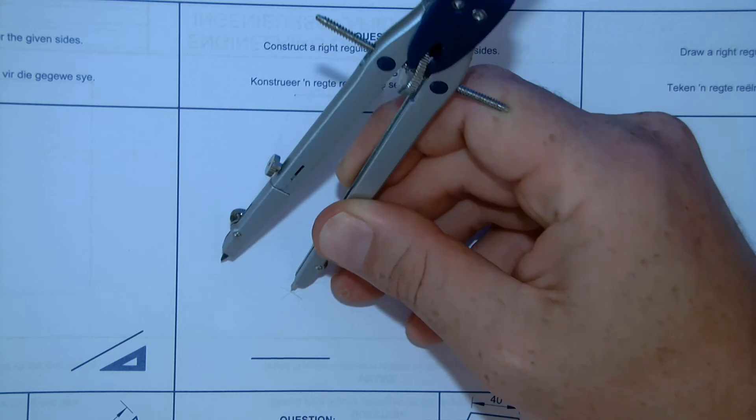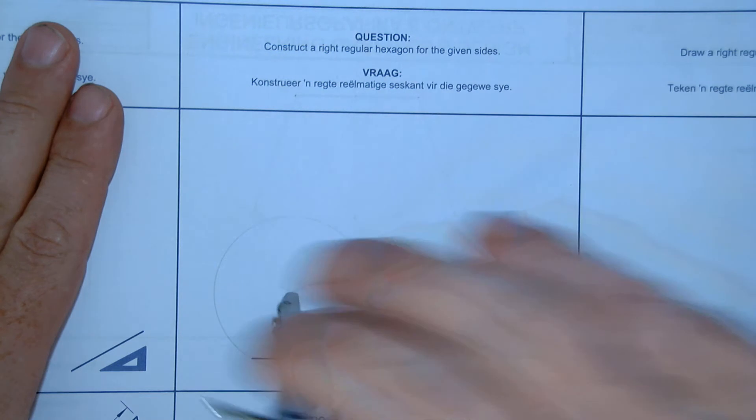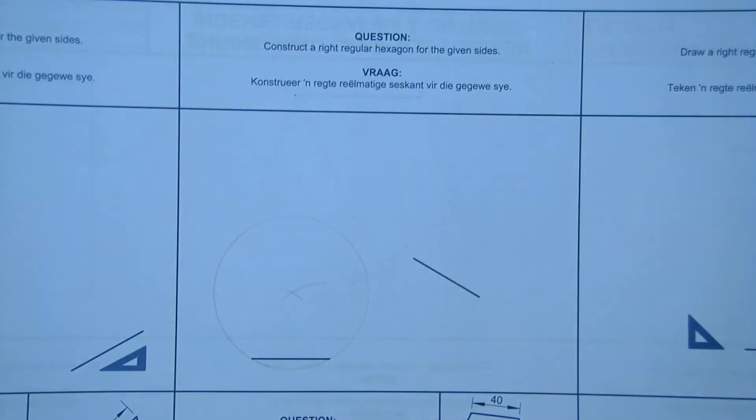I'm going to take my compass, put it in the middle, on the mark, and just draw an arc. Once again, this is a construction.